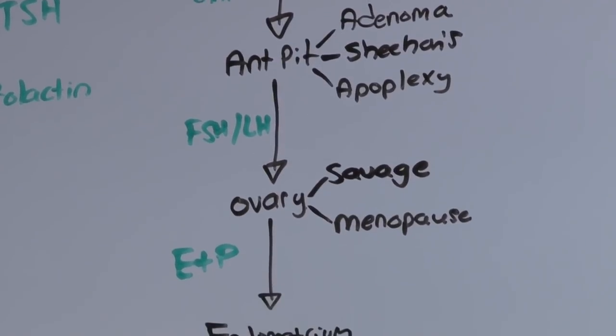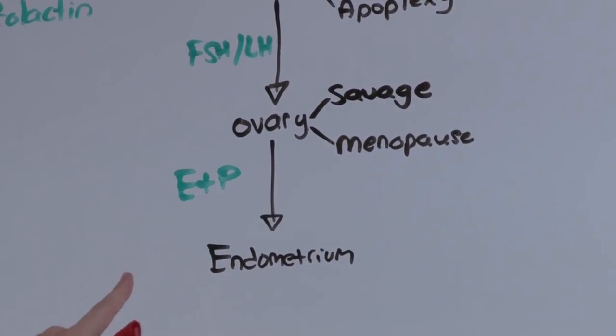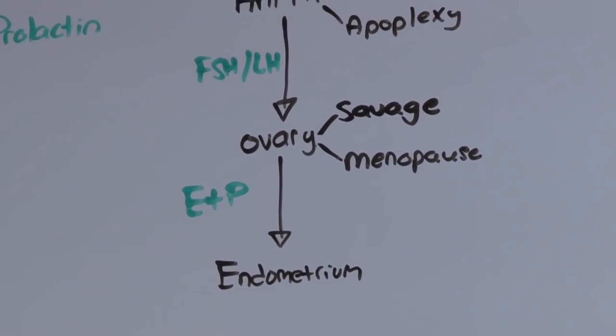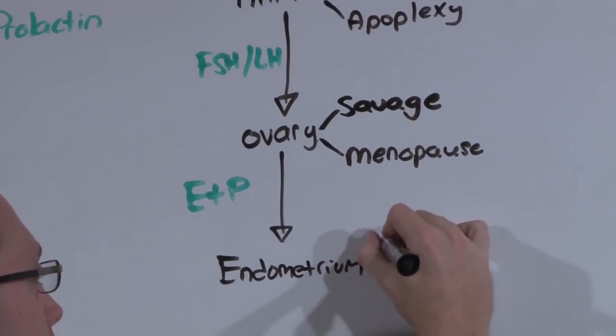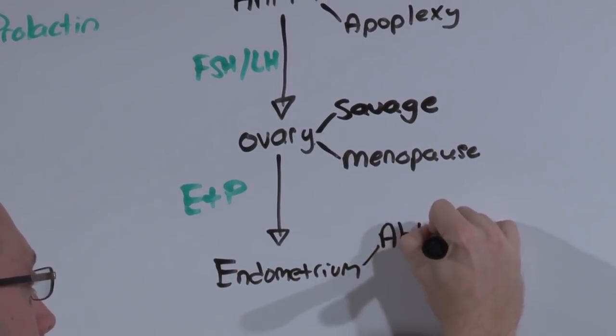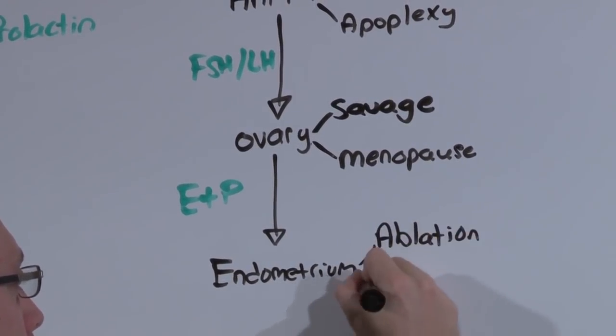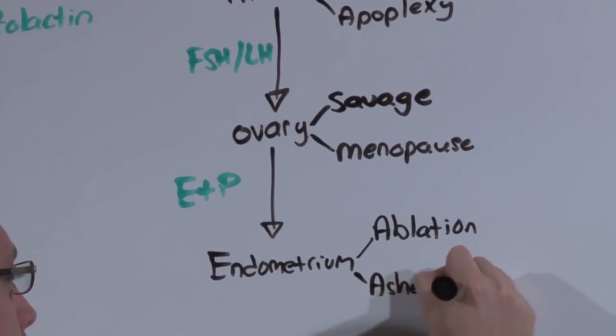And finally, at the level of the endometrium, you have to ask, can this patient bleed at all? And the things that will prevent that have been a previous ablation, we did it on purpose, or Asherman's syndrome, fibrosis of the endometrium.